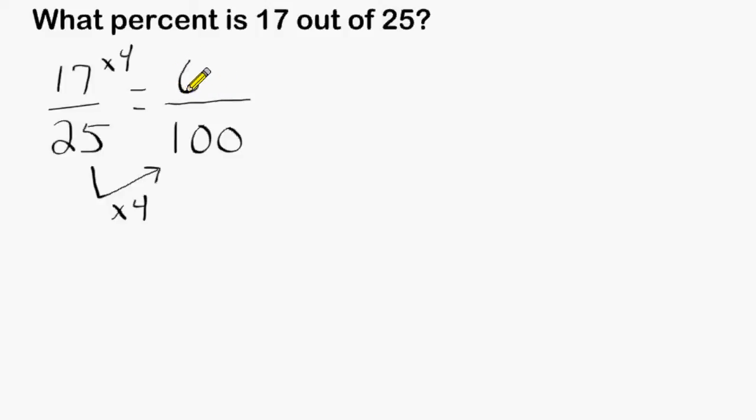17 times 4 is equal to 68, so we know that 17 out of 25 must be equal to 68 out of 100, or 68%.